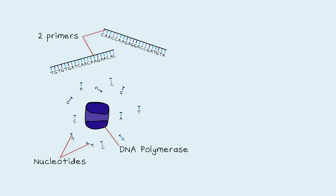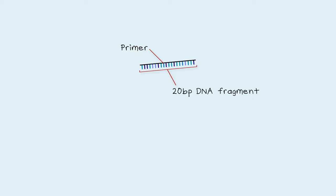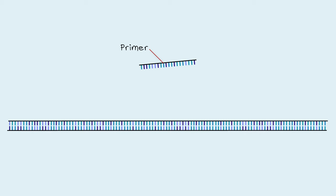A primer is a 20 base pair fragment of DNA that pairs with the target DNA. The DNA sequence of the primers is so specific that from a background of 22,000 genes, they can amplify one gene.